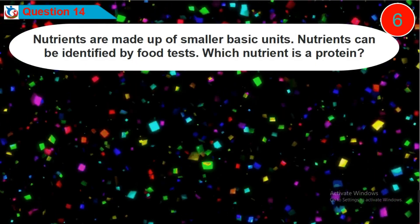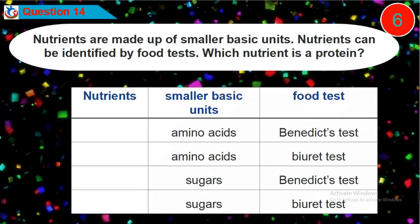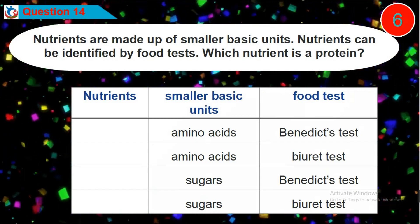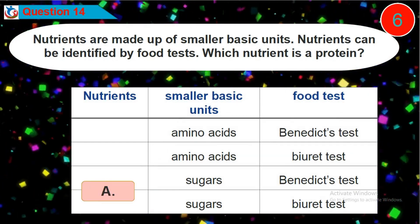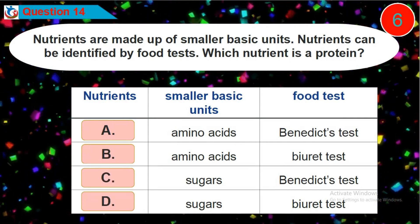Question 14. Nutrients are made up of smaller basic units. Nutrients can be identified by food tests. Which nutrient is a protein? Is it option A, B, C or D?